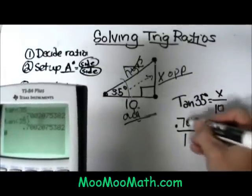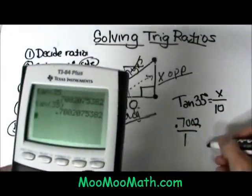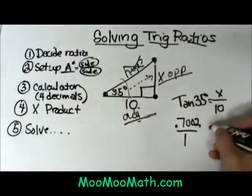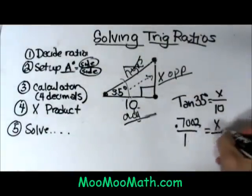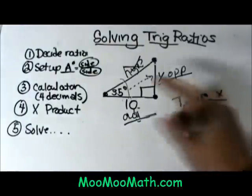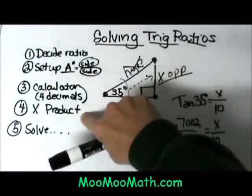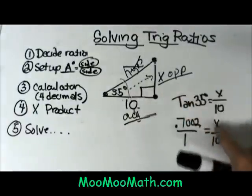I'm going to make this into a cross product so I'm going to stick a 1 underneath that and set it equal to x over 10. Now I'm going to do my cross multiplying. Once I get that ratio set up just cross multiply.